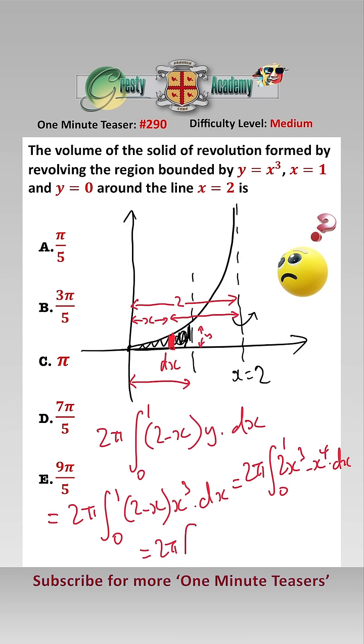and that equals 2 pi x to the 4 over 2 minus x to the 5 over 5 between 1 and 0, and that equals 3 pi over 5, which is answer b.